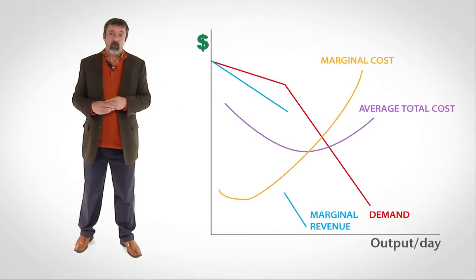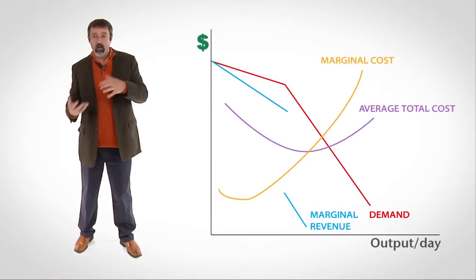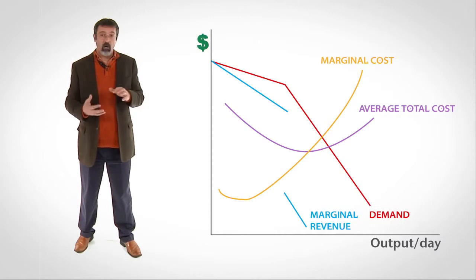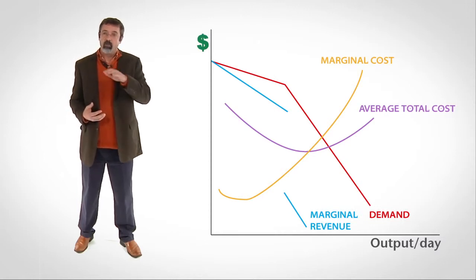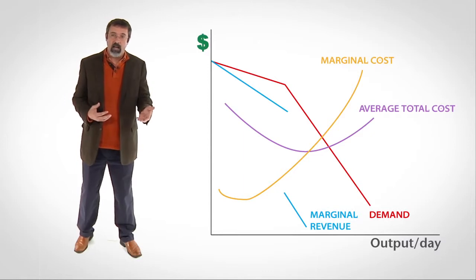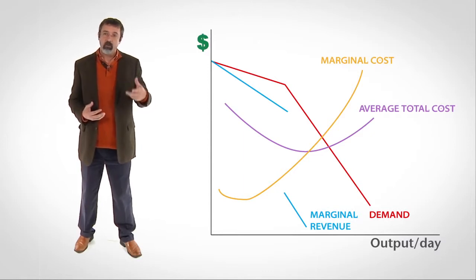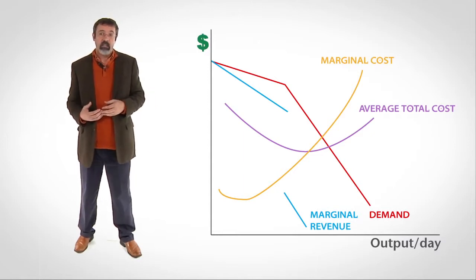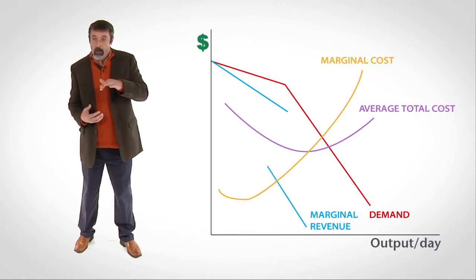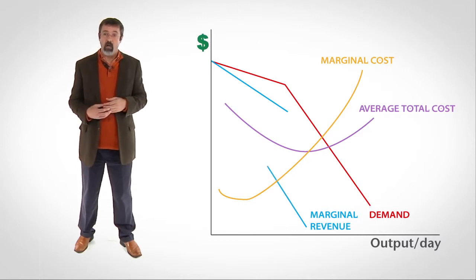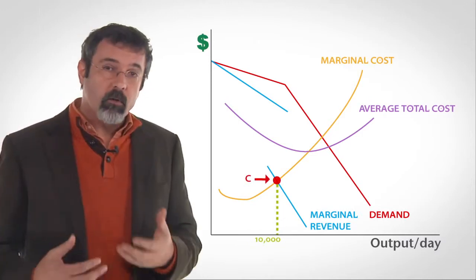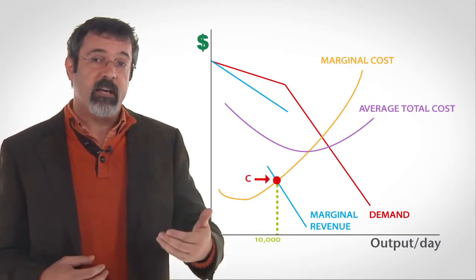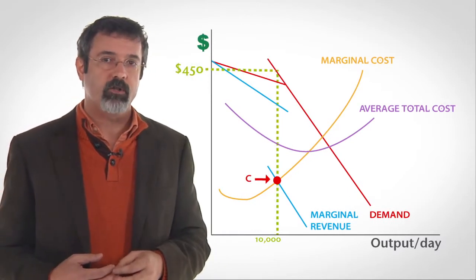Here's our oligopoly firm that's now colluding with the other firms as a member of a cartel. Because the flat demand and marginal revenue curves no longer apply, we find that the firm's profit-maximizing output is where the steep MR curve intersects the marginal cost curve, or point C. We follow this point up to the steep demand curve to find the price the cartel will charge.